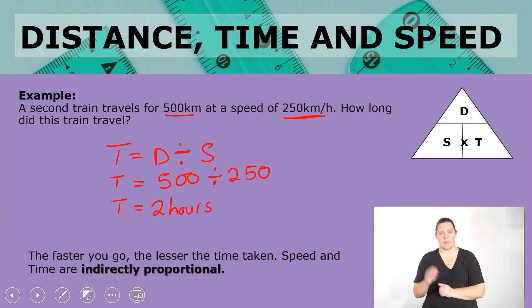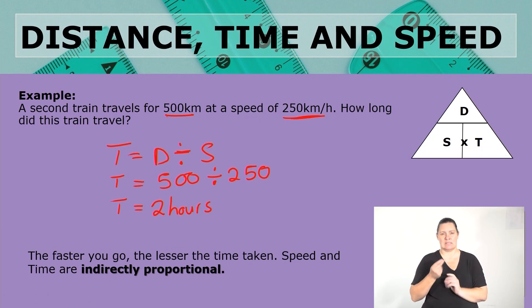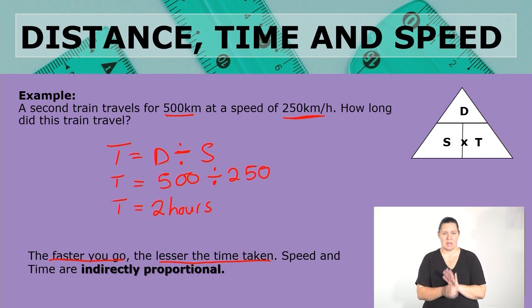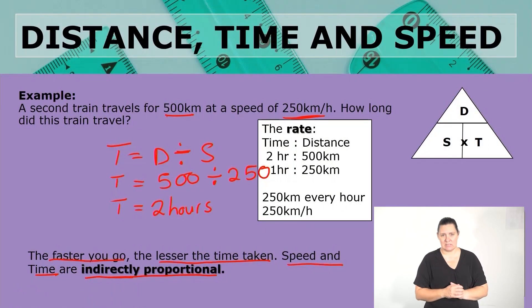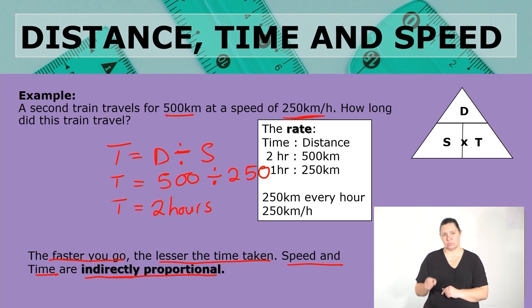Let's look at what this means. We did increase the speed, so that means the faster you go, the less time taken. With the previous example, when our speed was 200 kilometers per hour, we had two and a half hours. But now with the increased speed, the time taken becomes less. This means that speed and time are indirectly proportional — as one quantity increases, the other decreases, or vice versa. The rate would be two hours is to 500 kilometers, which simplifies to one hour is to 250 kilometers — that is 250 kilometers per hour.